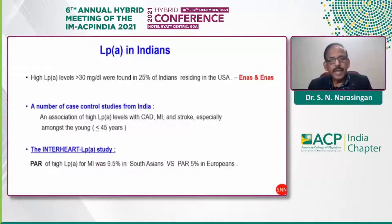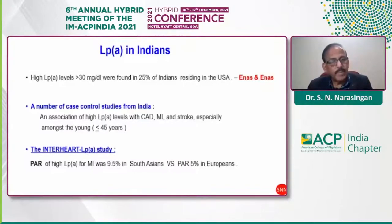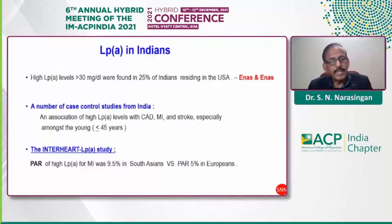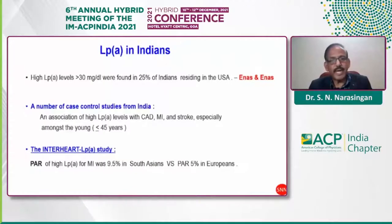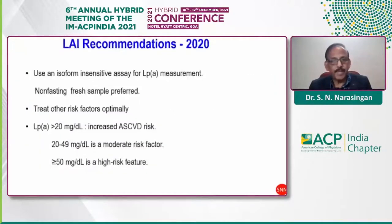Regarding lipoprotein(a) in Indians: research has shown Lp(a) levels are nearly 30 mg higher in Indians who have settled in the United States. Case-control studies from India indicate Lp(a) levels are connected with CAD, MI, and stroke, especially among individuals under 45 years of age. The InterHeart study showed a population attributable risk for high Lp(a) for myocardial infarction of 9.5% in South Asia compared to 25% in Europeans.